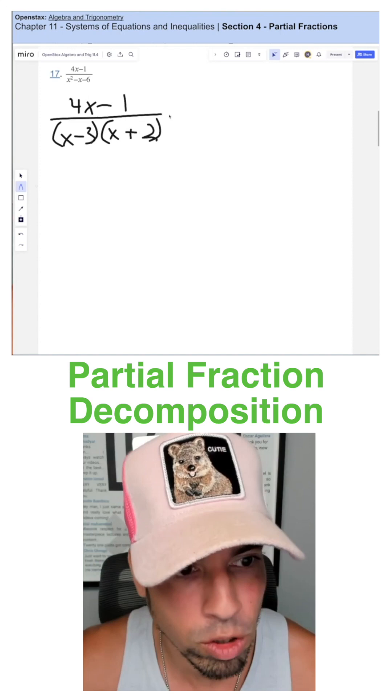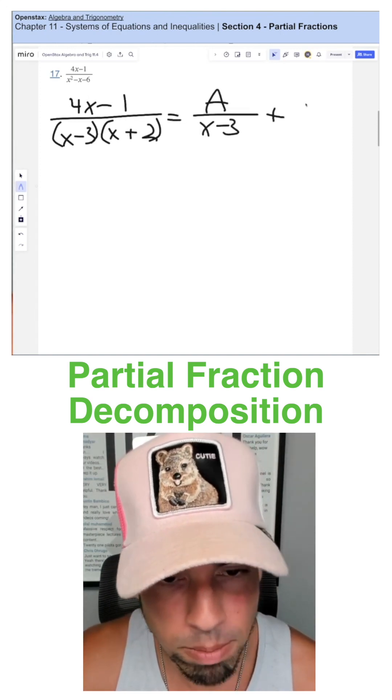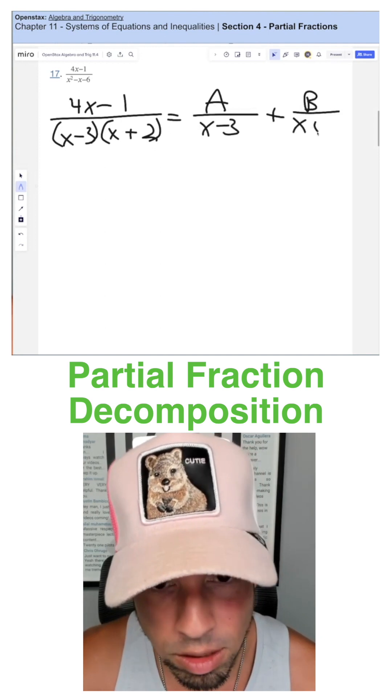Okay, negative three plus two is negative one. Cool. And this equals A over that first binomial plus B over the second, x plus two.